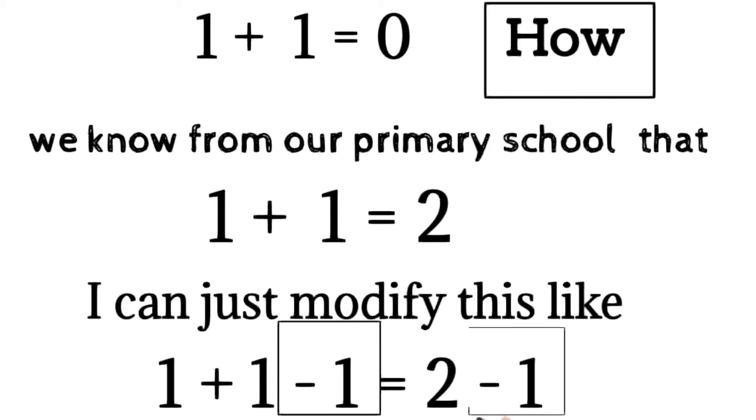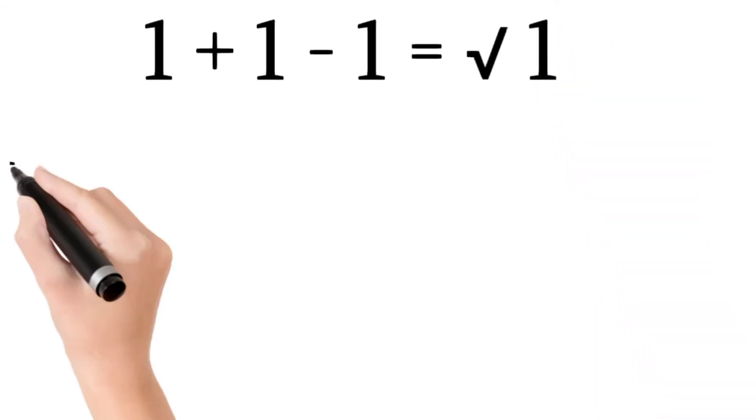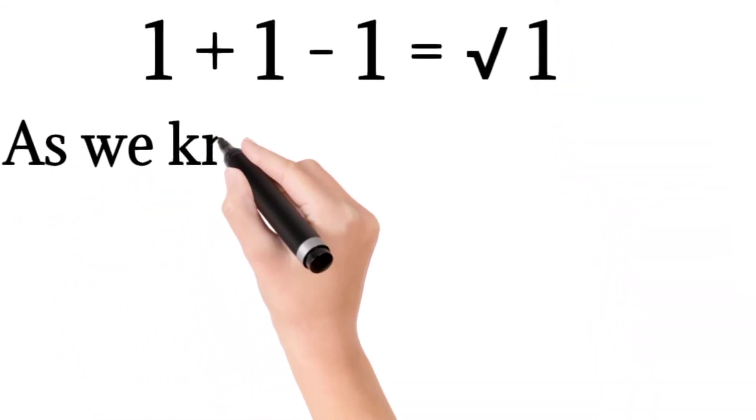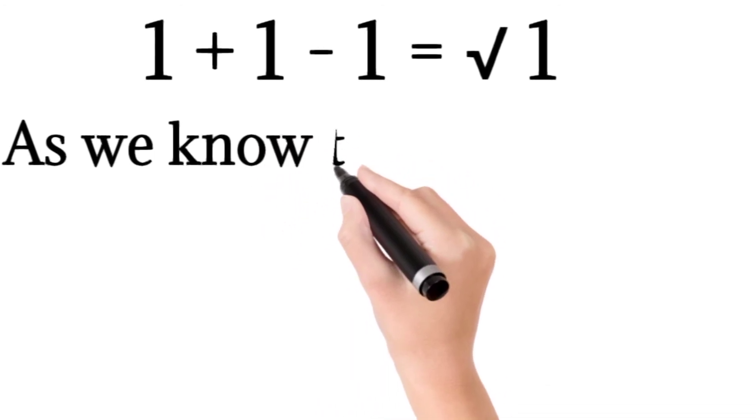And square root again - the same left hand side. We modify the right hand side. Square root is equal to 1 because 4 - 4 cancels, as we know.